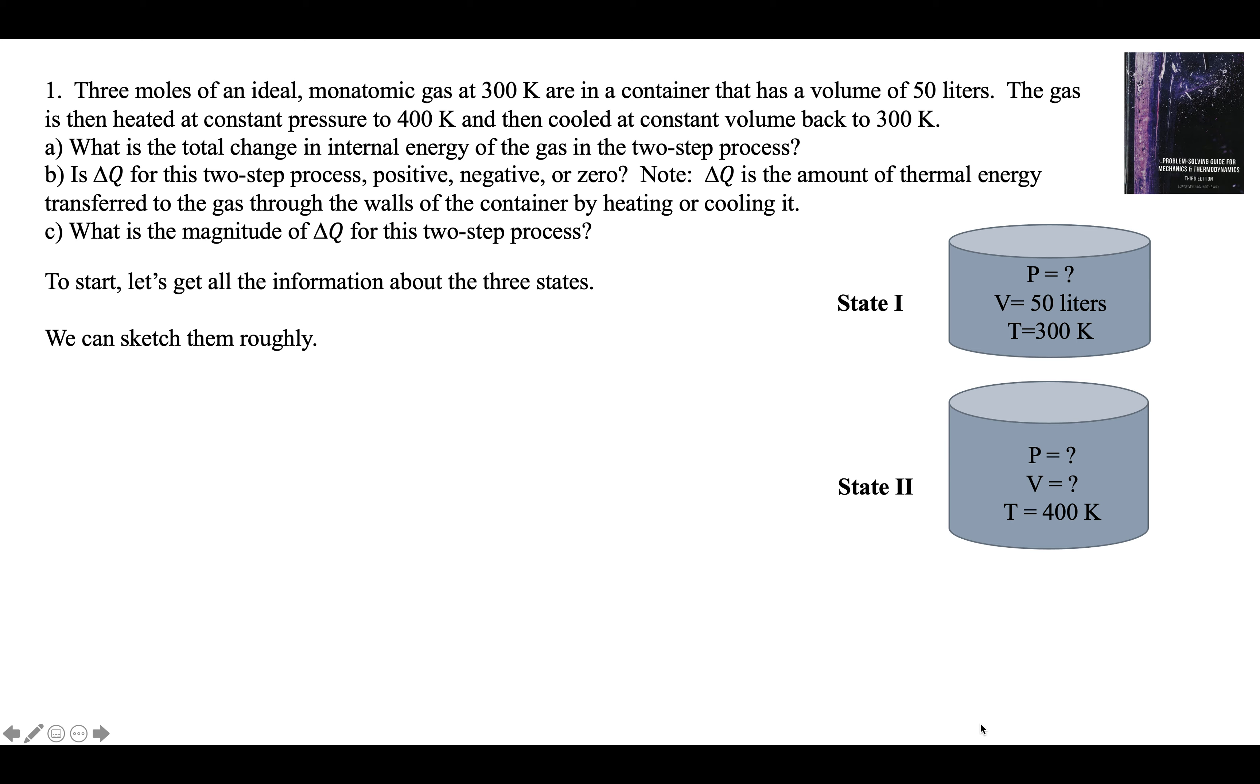Then we heat it at constant pressure. If you heat something and you keep the pressure the same, it has to get bigger. The volume has to expand. Now it's 400 kelvins. We don't know the pressure or the volume. Then we cool it at constant volume back to 300 kelvins.